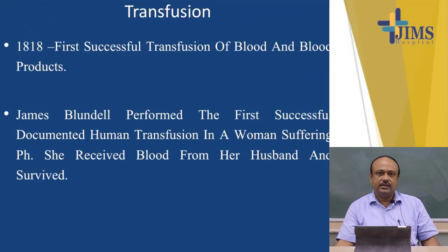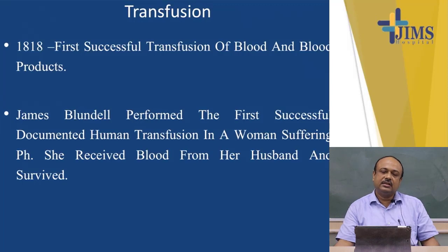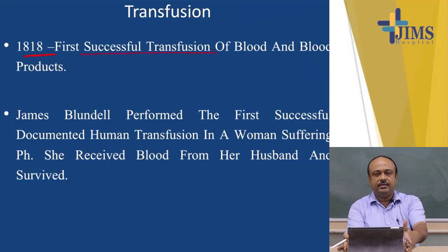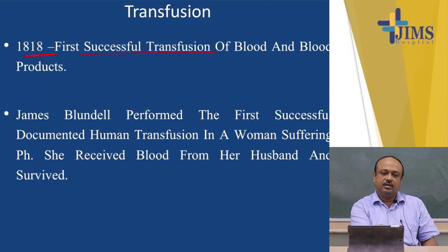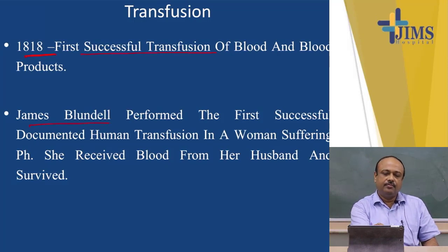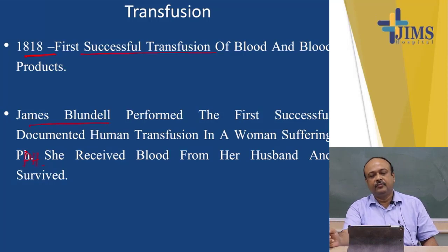Blood is transfused and it has its various indications. The very first blood transfusion was successfully carried out in the year 1818, which was performed by James Blundell. He performed the first human transfusion in a woman suffering from PPH, that is postpartum hemorrhage. This patient received blood from her husband and luckily she survived.